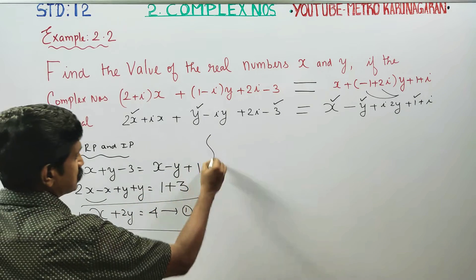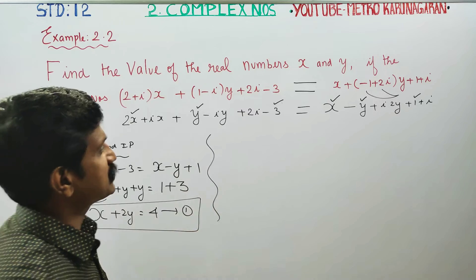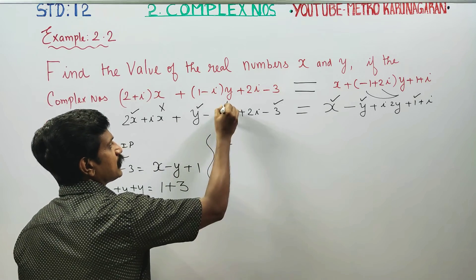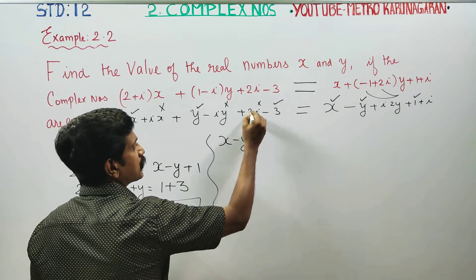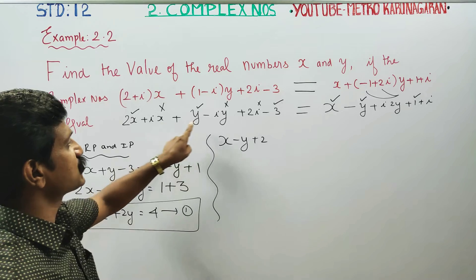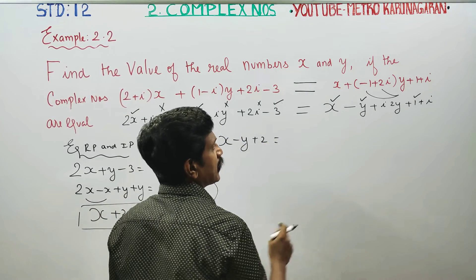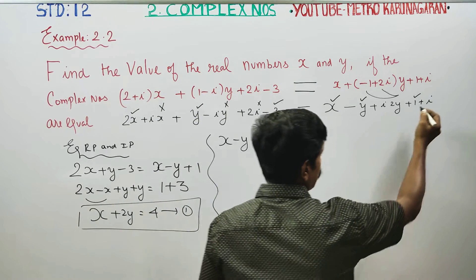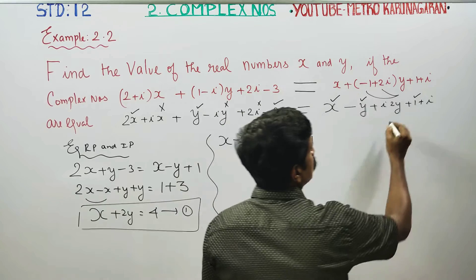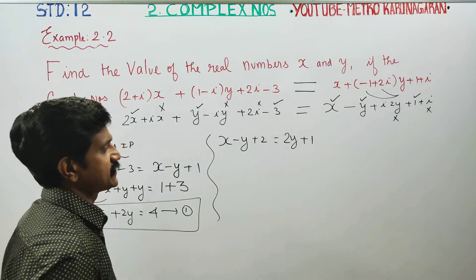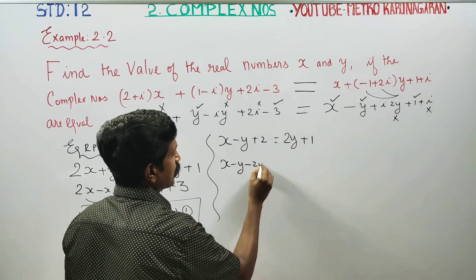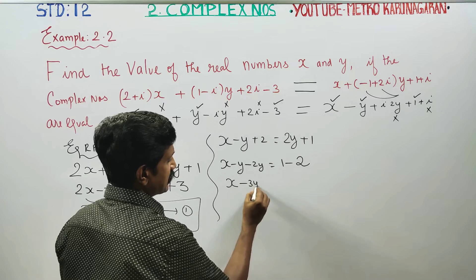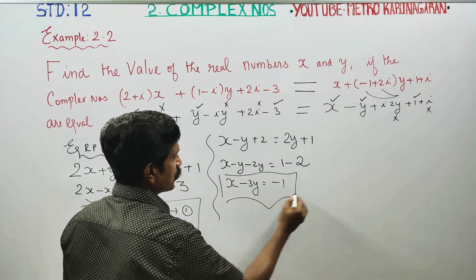After getting Equation 1, just equate the imaginary parts — the coefficient of i. Collecting those terms: minus 2y, plus 2y, and 1 plus 2 gives minus 2. This gives us x minus 3y equals minus 1, which is Equation 2.